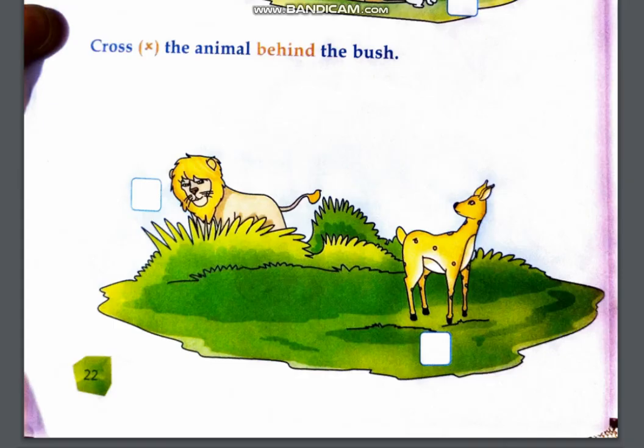We will cross the animal behind the bush. The deer is in front of the bush and the lion is behind the bush.